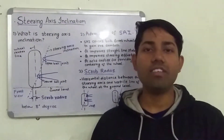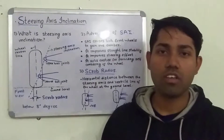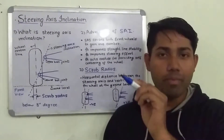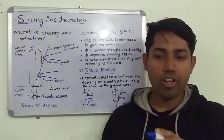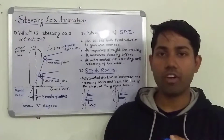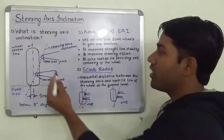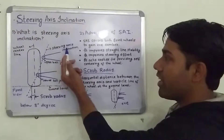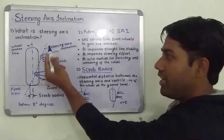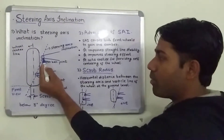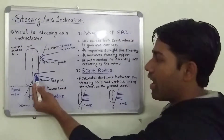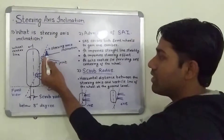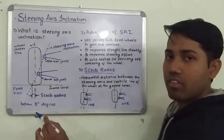First of all, what is the steering axis? The steering axis is a line made by the upper ball joint and lower ball joint. As you can see in this figure, this is the steering axis — a line made by the upper ball joint and lower ball joint. So this line is called a steering axis.